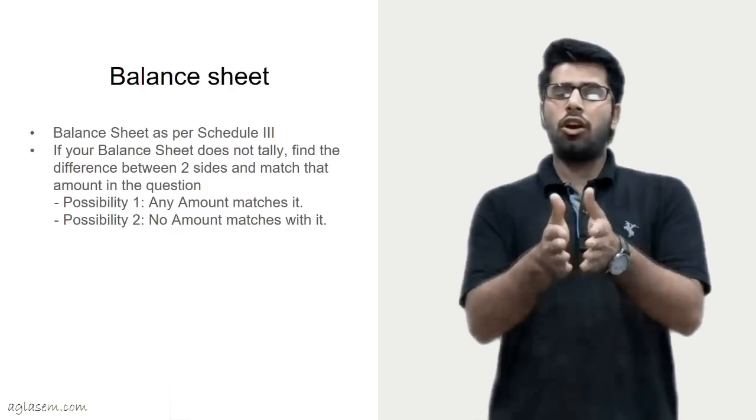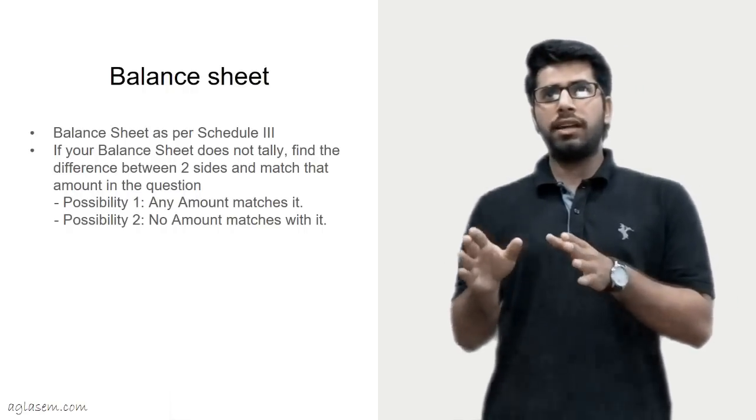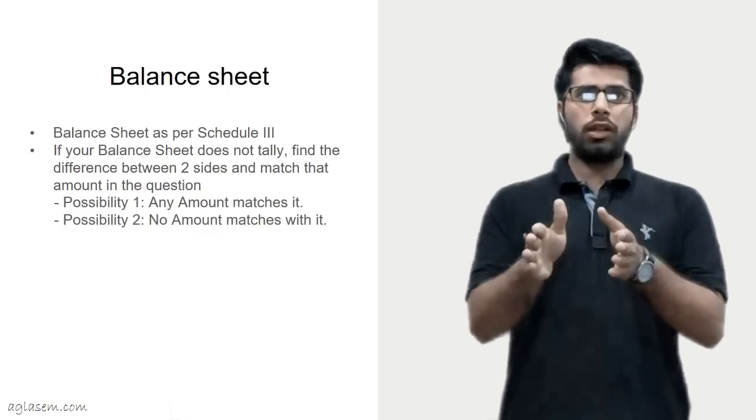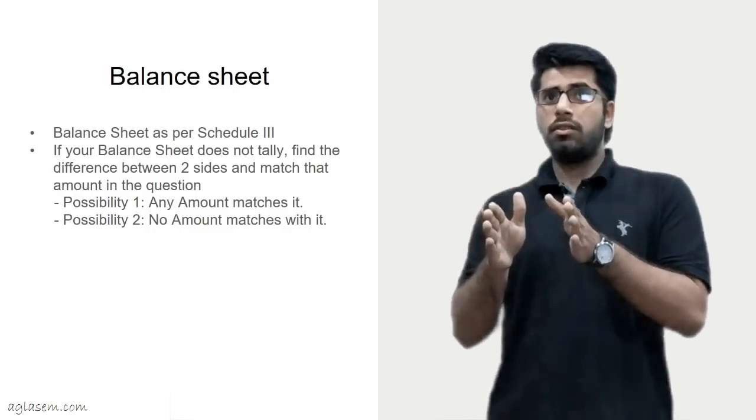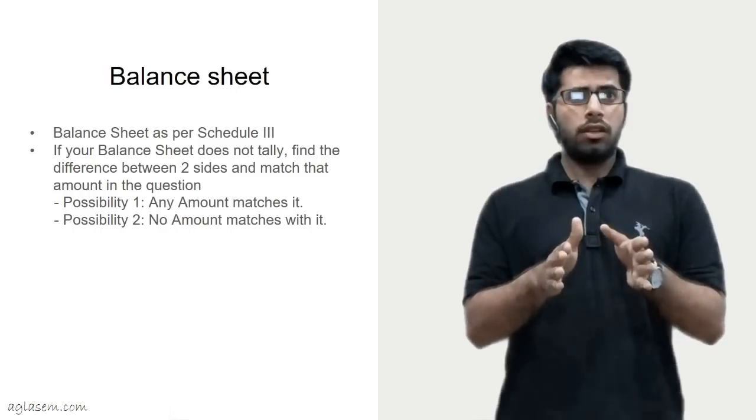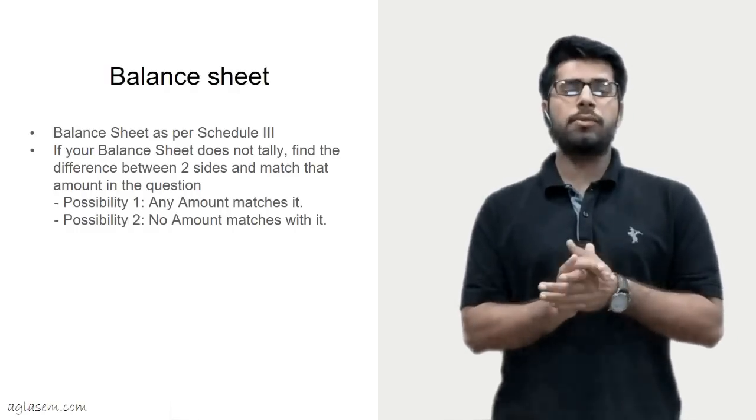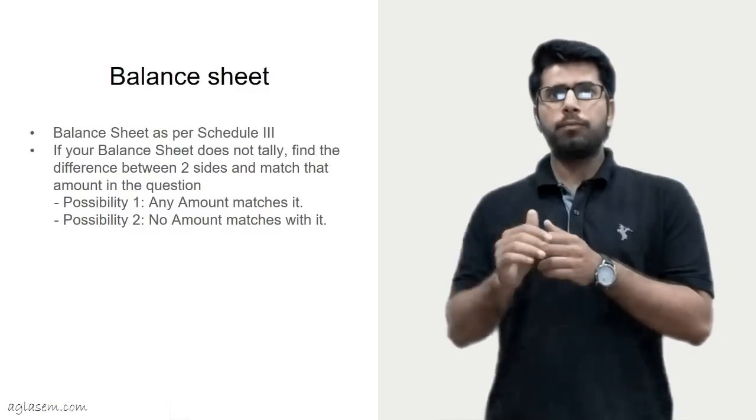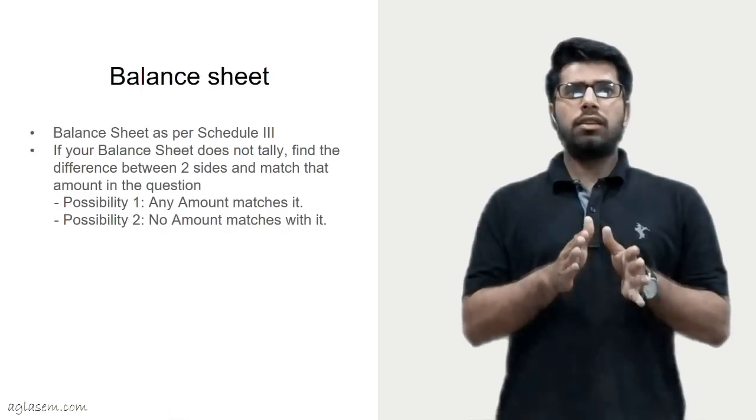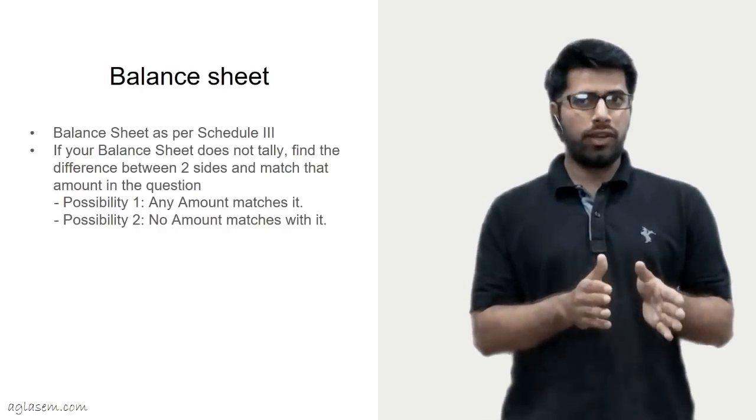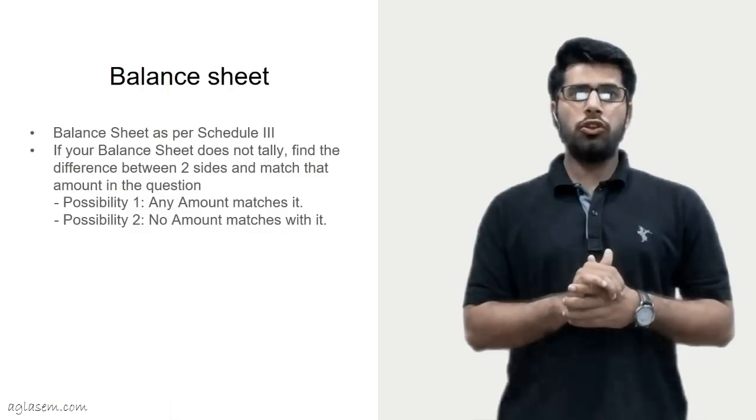What if your balance sheet does not tally? It is a common mistake that students make while attempting the question. All you need to do is to find out difference between two sides and match that amount in the question. Then there may be two possibilities. Possibility 1: Any amount matches with the difference. If any amount matches the difference then see whether you have given both the effects of a transaction properly and if not then show that effect and your balance sheet will be matched. Possibility 2: No amount matches with the difference. If such amount is not found then double it or make it half of that amount to find that such related figure due to which difference is coming. Remember that any figure comes from the balance sheet then you need to show single side effect in the required account or statement because second effect of that item exists in the balance sheet itself. Make sure you do not waste time in this process.